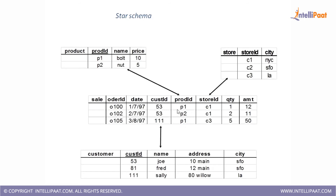It will check for the product ID column where the entry is P1. If there are two P1 entries — that is, two orders placed on product P1 — the output would be two records: order numbers 100 and 105. Similarly, if you want to know all orders placed in store C1, the store ID foreign key column connects the two tables. You select order ID from the fact table, join with the store table on store ID, where store ID equals C1. Again, you have two orders in store C1 — order numbers 100 and 102.